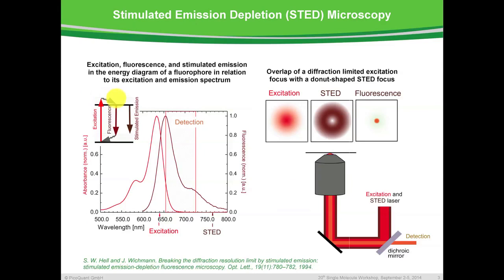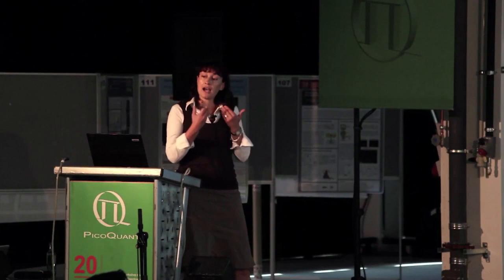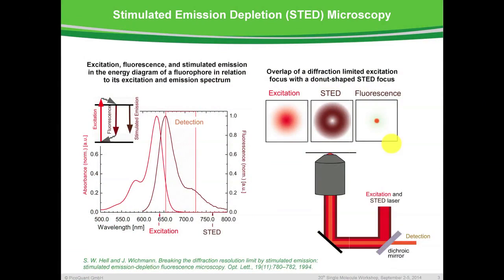I believe everybody is quite familiar with the STED principle. To the left, you see the excitation, fluorescence, and the stimulated emission in the energy diagram of a fluorophore in relation to its excitation and emission spectrum. For STED, we use excitation and a STED wavelength. The two wavelengths, typically coming from a laser, are overlaid and then coupled into the microscope and into the sample, where we have a diffraction-limited excitation focus overlapped with a donut-shaped STED focus. Since we use very high STED powers, molecules in the outer areas of the excitation focus are forced into the ground state, and we are only left with fluorescence from the center of the donut, which is then collected. This principle was published by Stefan Hell in 1994.